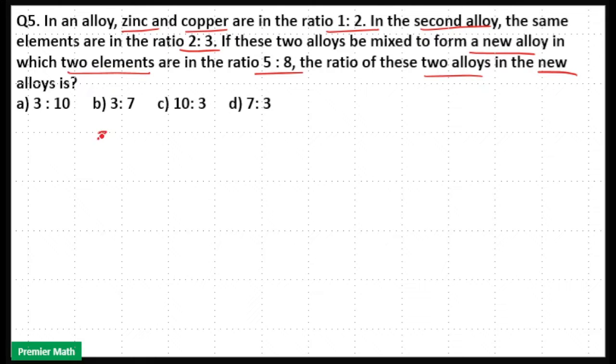We have two alloys. Zinc and copper in the first alloy are in the ratio 1:2, and in the second alloy in the ratio 2:3. After mixing these two alloys, a new alloy is formed in which zinc and copper are in the ratio 5:8. We need to find the ratio in which these two alloys mixed to form this third alloy.